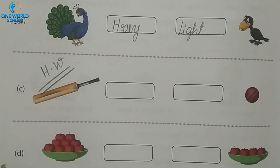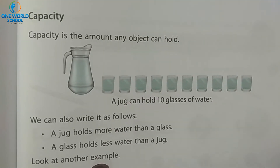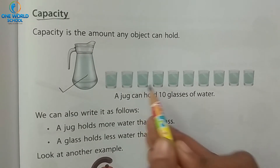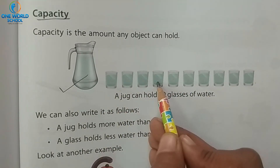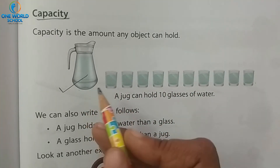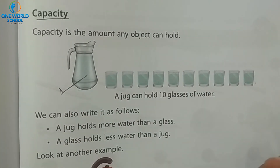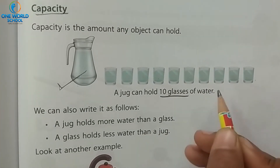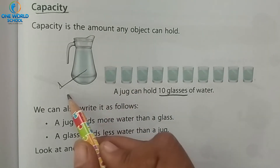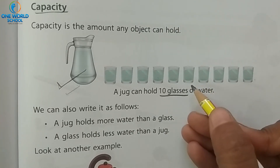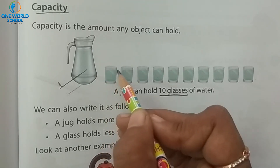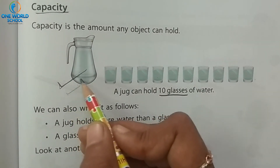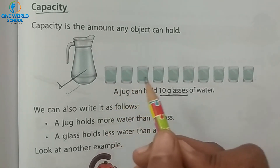Take the next page. Next and last measurement is capacity. Here, a jug full of water and a glass of water — which has more water? The jug has more, because you would need ten glasses to equal one jug. So, a jug holds more water and a glass holds less water.